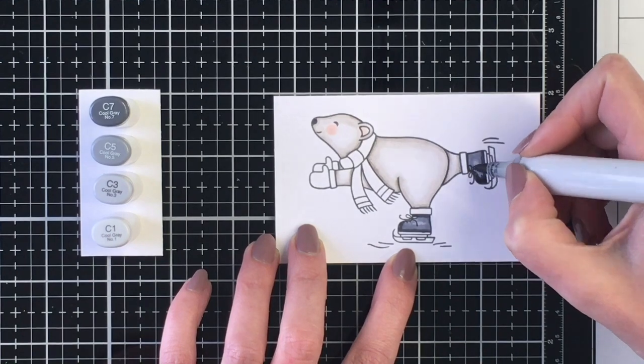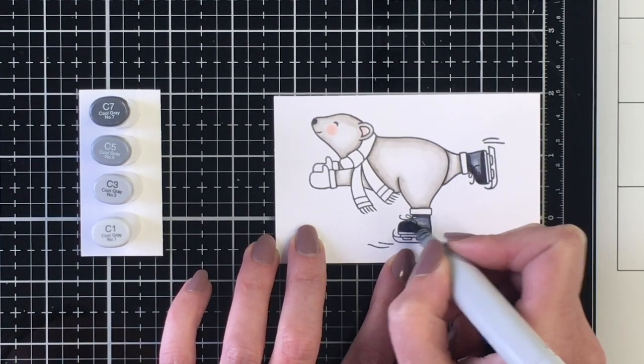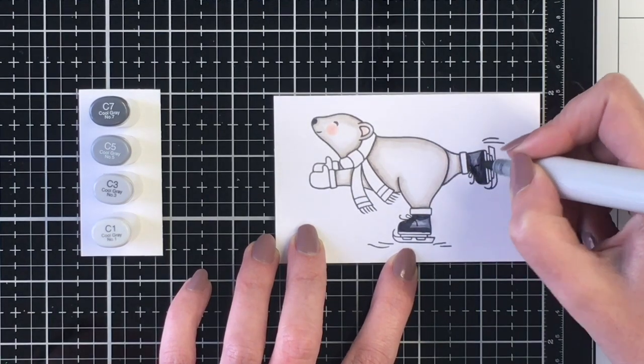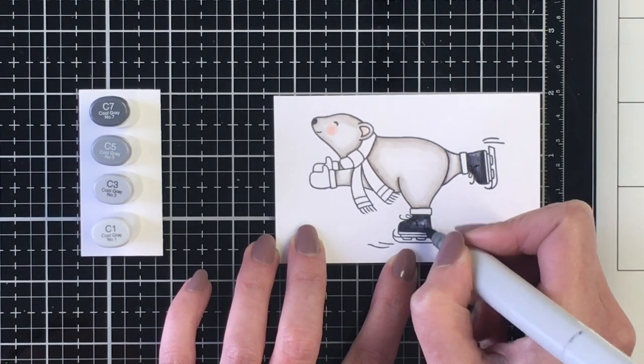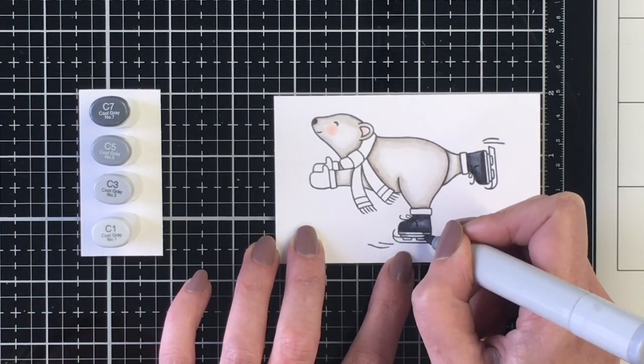Did go out of the lines a little bit, so just using my blender marker to fix that. And then decided that I wanted his skates to be a little bit darker. So I'm going to go over this another time and this time I'm going to actually leave out the C1.